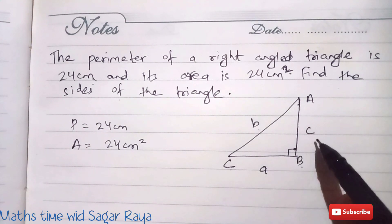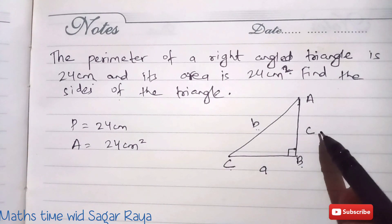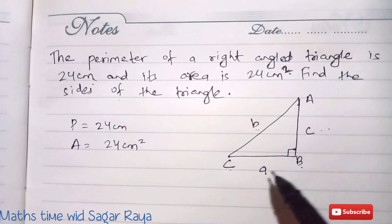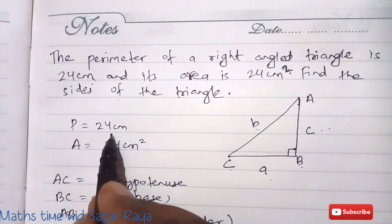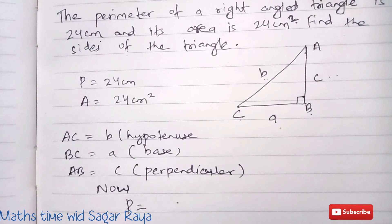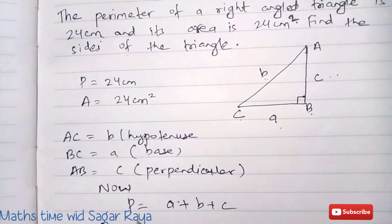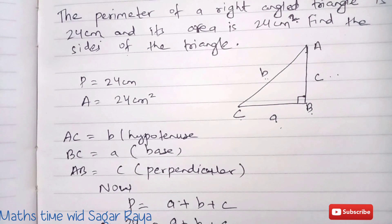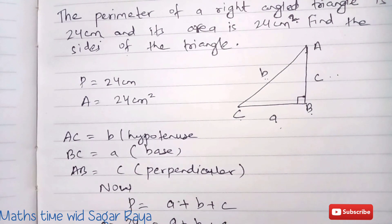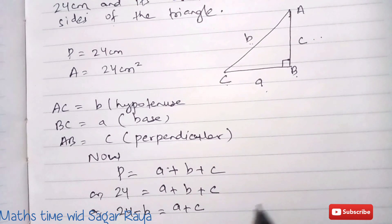The small letter a is opposite to angle A, small b is opposite to angle B, and small c is opposite to angle C. Since b is the longest side, b is the hypotenuse, c is the perpendicular, and a is the base. Now, since the perimeter is 24 cm, we write: perimeter = a + b + c = 24. Rearranging: a + c = 24 − b. Let this be equation 1.